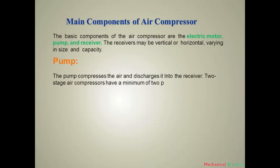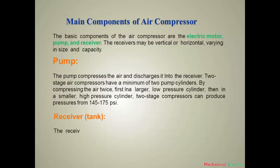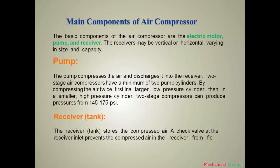The purpose of the pump is to compress the air and discharge it through a pipe into the receiver. Two-stage air compressors have a minimum of two pump cylinders, compressing the air twice — first in a larger low-pressure cylinder, then in a smaller high-pressure cylinder, producing low to medium pressure. The receiver is a tank that stores the compressed air. A check valve at the receiver inlet prevents compressed air from flowing back into the compressor pump — the valve must be operating, otherwise compressed air flows back into the pump.